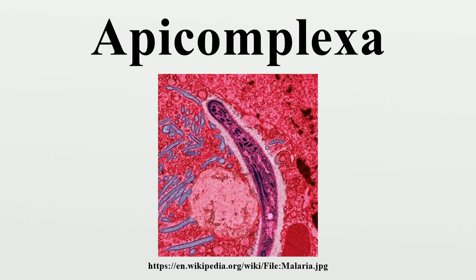Class Aconoidasida: conoid present only in the ookinete of some species. Order Haemosporida: macrogamete and microgamete develop separately; syzygy does not occur; ookinete has a conoid; sporozoites have three walls; heteroxenous, alternating between vertebrate host and invertebrate host, usually blood parasites transmitted by blood-sucking insects. Order Piroplasmorida. Class Conoidasida, subclass Gregarinasina: Order Archigregarinida, Order Eugregarinida, suborder Adelerina, suborder Eimeriorina, Order Neogregarinida. Subclass Coccidiasina: Order Agamococcidiida, Order Eucoccidiida, Order Ixorheorida, Order Protococcidiida. Class Perkinsasida: Order Perkinsida, family Perkinsidae. The name ProtoApicomplexa has been proposed for the common ancestor of the Gregarinomorpha and Coccidiomorpha.